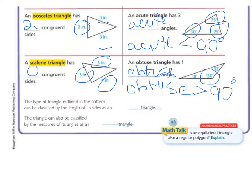It says the type of triangle outlined in the pattern can be classified by the length of its sides as an equilateral triangle because its sides are all congruent. So we're going to write equilateral there. And the triangle can also be classified by the measures of its angles as an acute triangle because all of its angles are less than 90 degrees. So be sure you have all of these definitions, so there should be 6 of them, written in your math notebook.